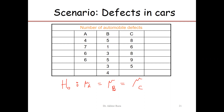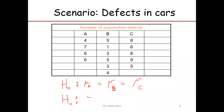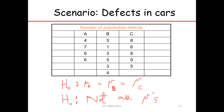The alternate hypothesis is that at least two of the models are not the same in the perspective of the number of defects in cars — that is, not all means are equal.